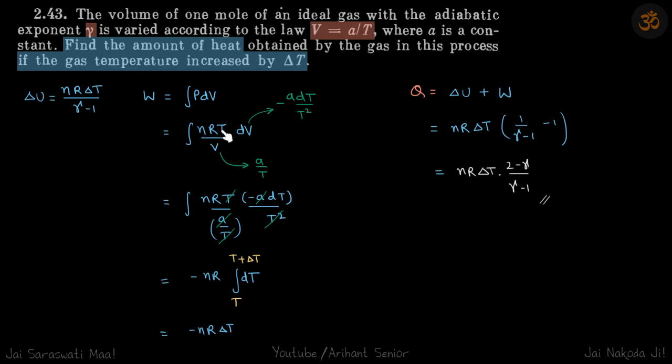P we can write as nRT by V. We have everything in terms of T, but we still have this V, so let's get rid of V as well. V is given as A by T, so dV will be minus A dT by T squared if you just differentiate this, and V we'll replace with A by T.